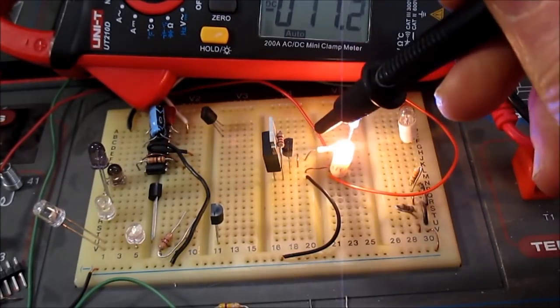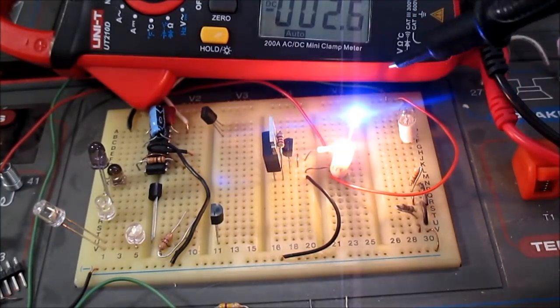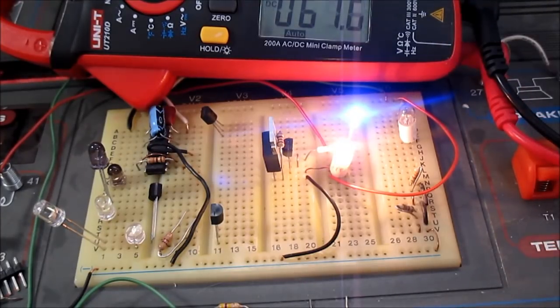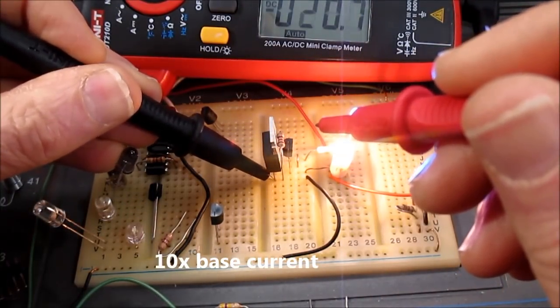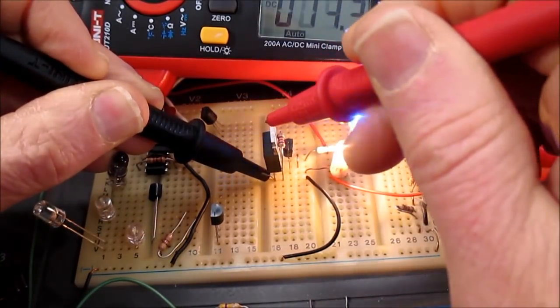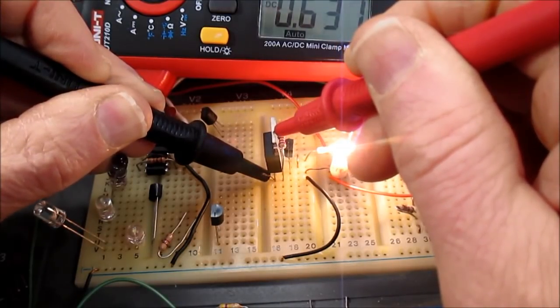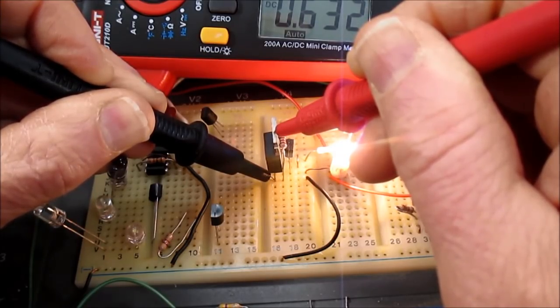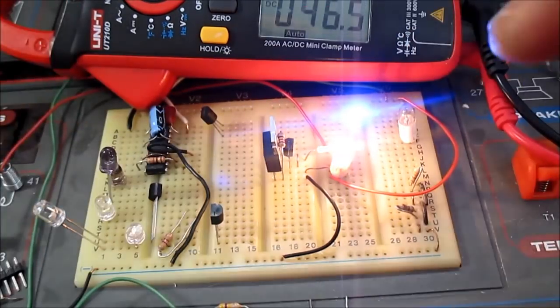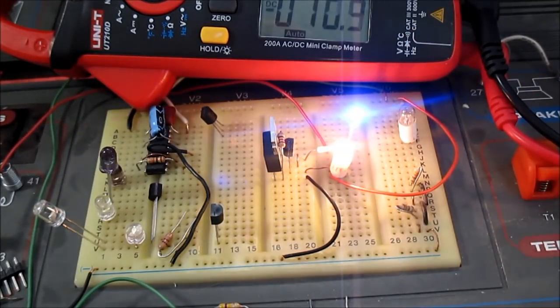I swapped out the 10k resistor with a 1k. You can see the LED is glowing a lot brighter, so we have about 10 times the current. And let's see if the transistor saturated or not. Nope, it's turned on slightly harder than it was, but it's still at 0.632 volts or 632 millivolts. So yeah, we cannot saturate that transistor in the Darlington circuit.